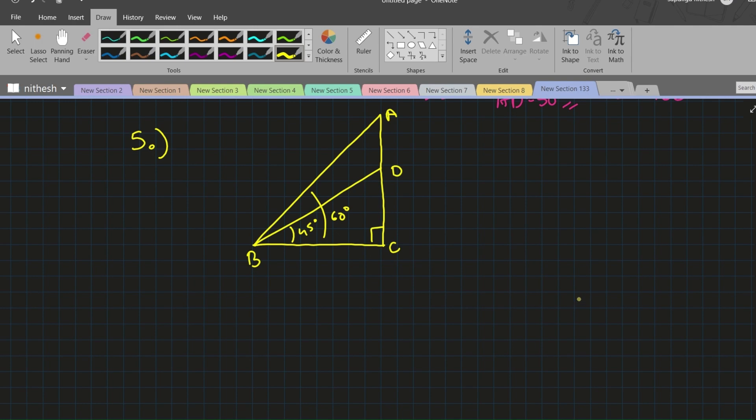We need to find the value of AB and BC. Therefore we get two triangles: triangle DCB and triangle ACB. So we make two triangles over here.